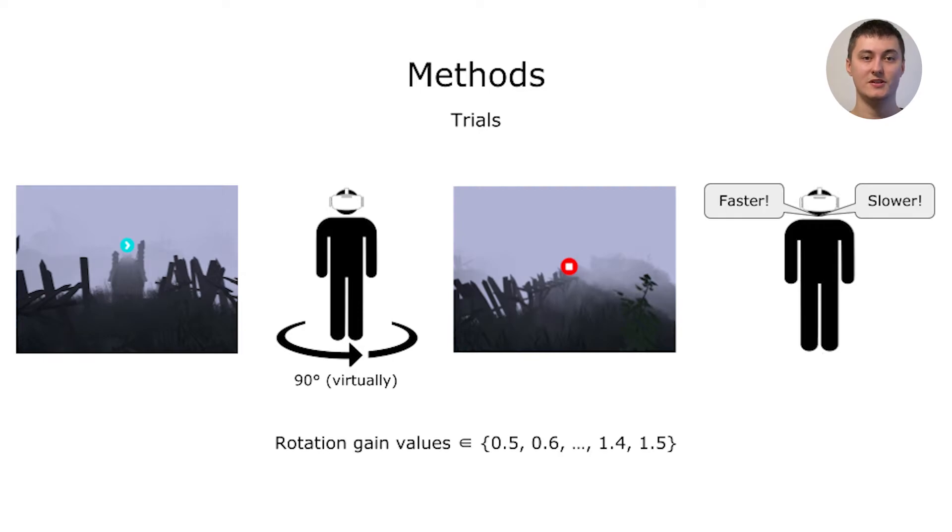Each virtual rotation was always 90 degrees, and for each trial a rotation gain was applied in the range between 0.5 and 1.5, in steps of 0.1. Each gain was repeated twice, resulting in a total of 132 trials. That is 22 for each condition, run in randomized order.